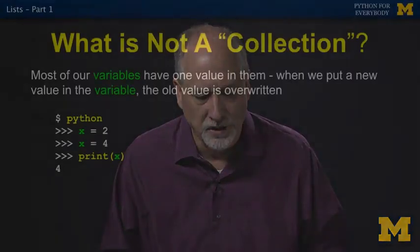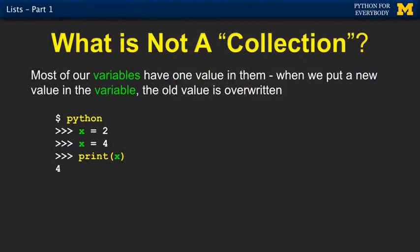Before we talk too much about collections, let's talk about what's not a collection. In this example, x equals two finds a piece of memory, Python labels it x and sticks a two in it. Then later it says x equals four, it finds that same piece of memory, overwrites the two with a four. So when it's all said and done, what we have is a four.